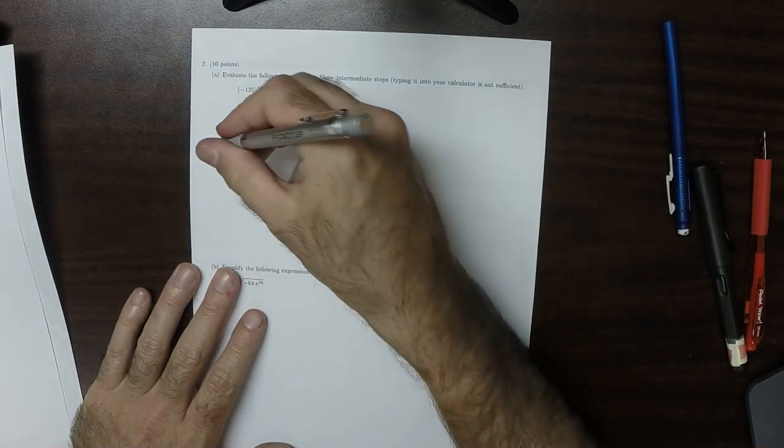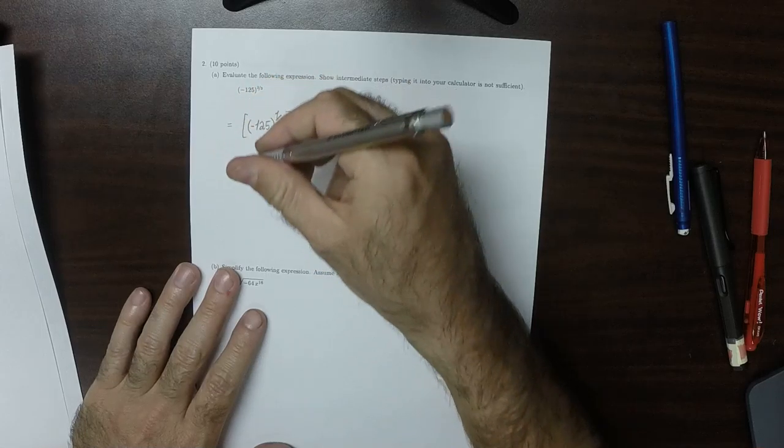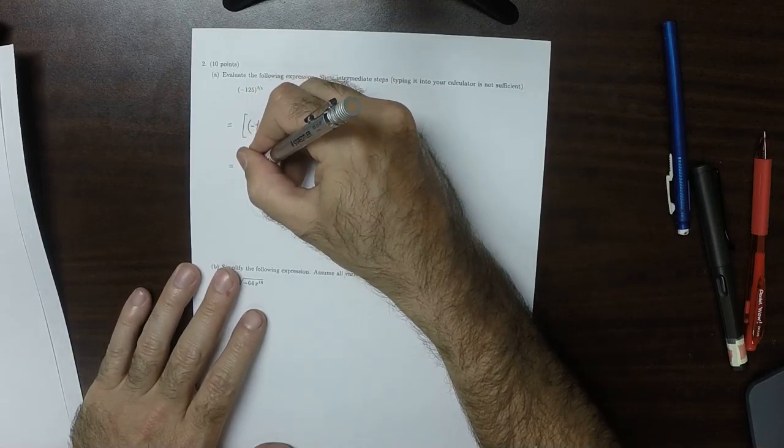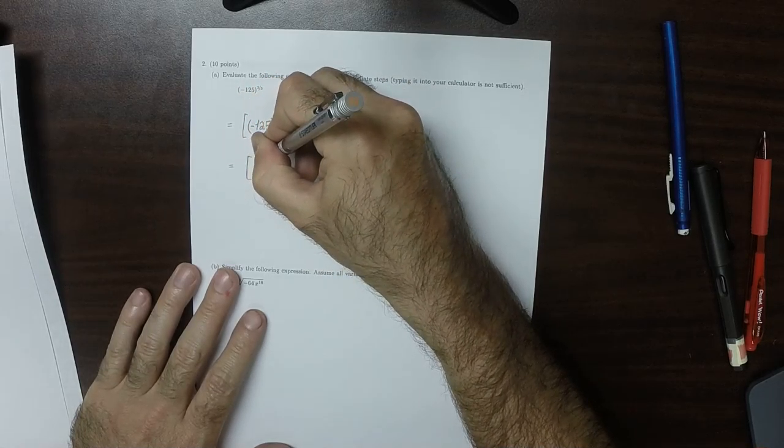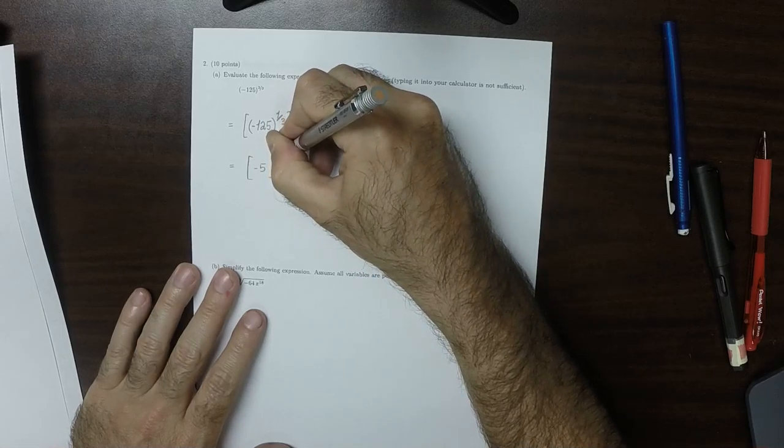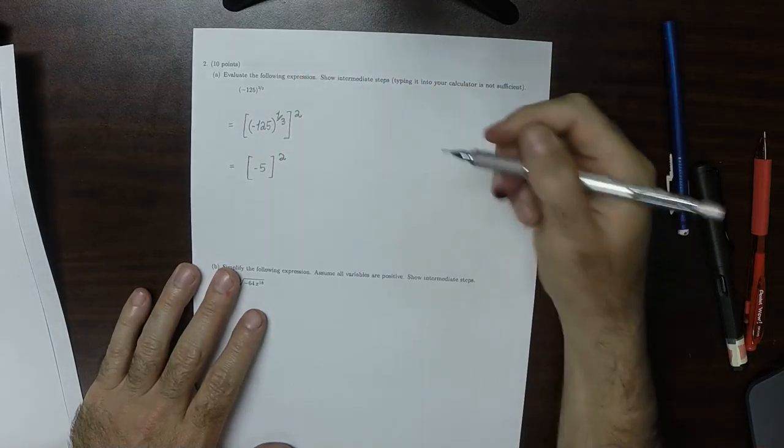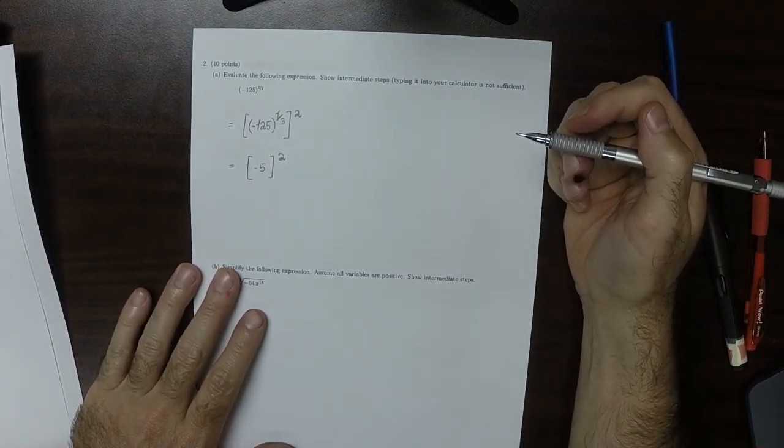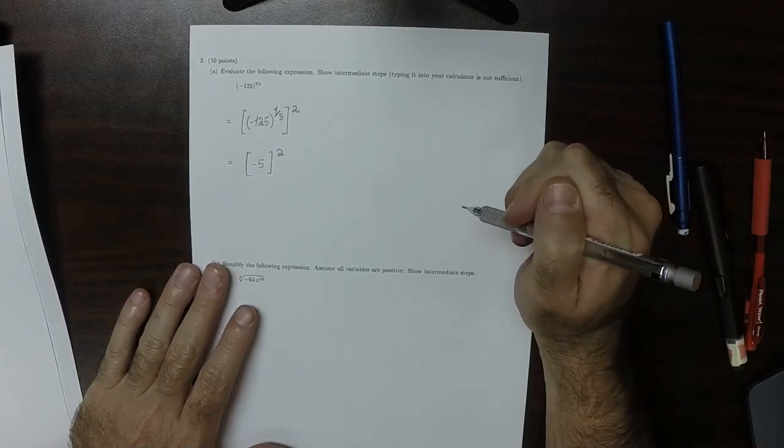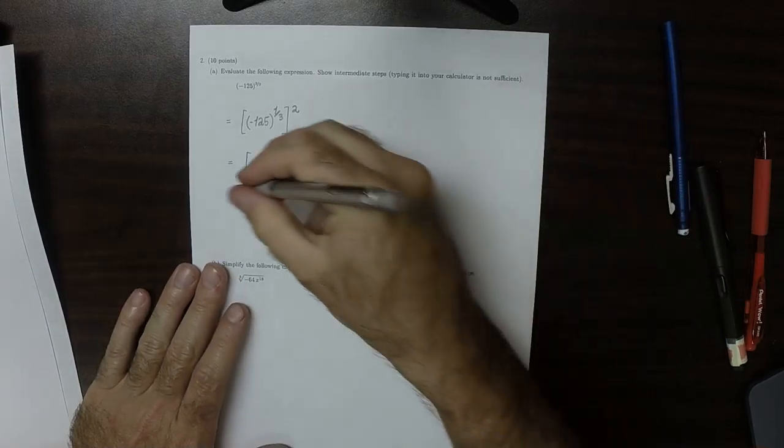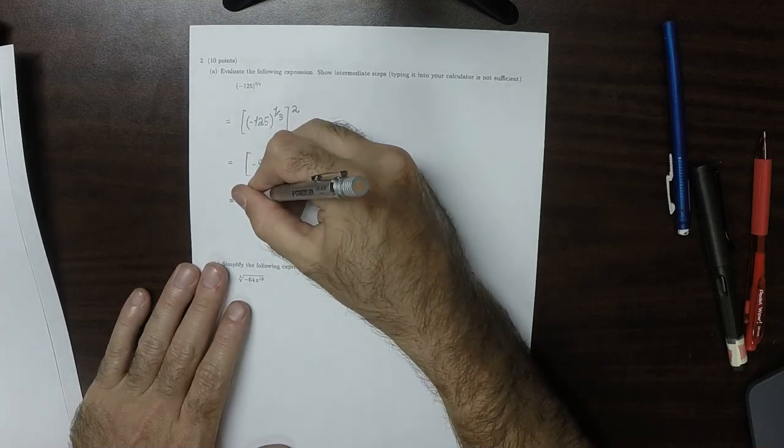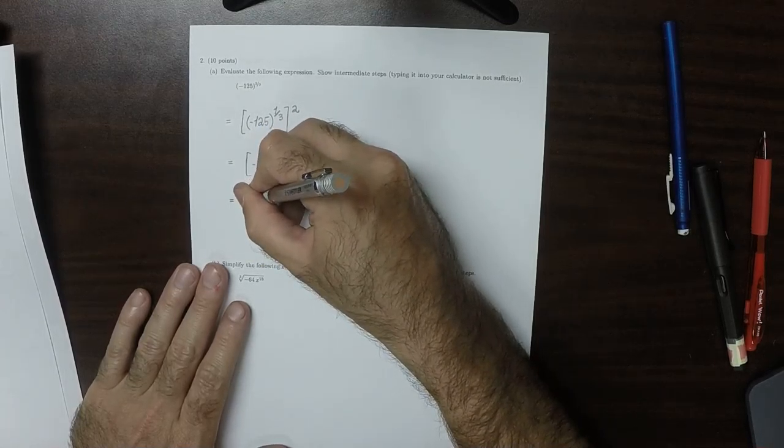So the cube root of 125 is negative 5. Because negative 5 times negative 5 is positive 25, times another negative 5 would be negative 125. And then negative 5 squared, that's 25.